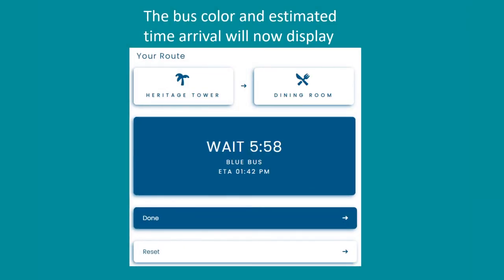The bus color and estimated arrival time will now display. Phase 1 of the transportation rollout excludes the villas. We will introduce Phase 2 in approximately 6 weeks once we work out all the details and kinks from Phase 1.